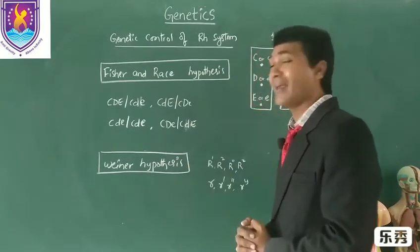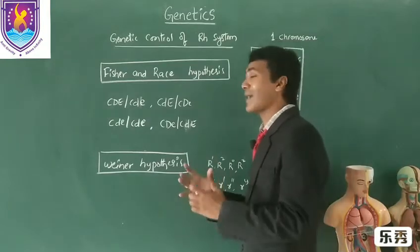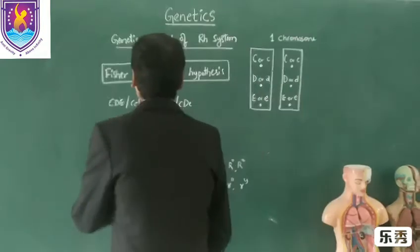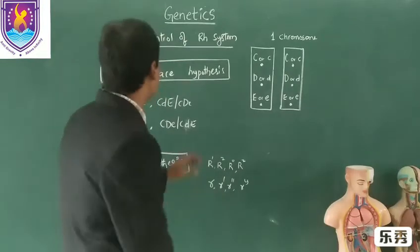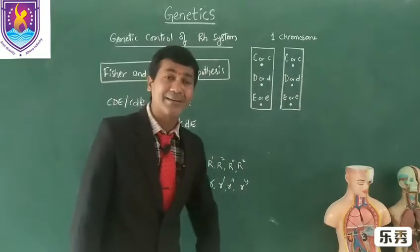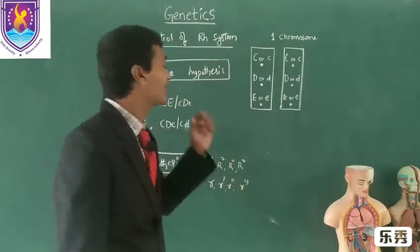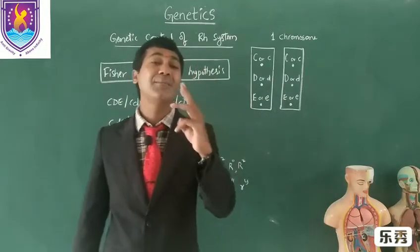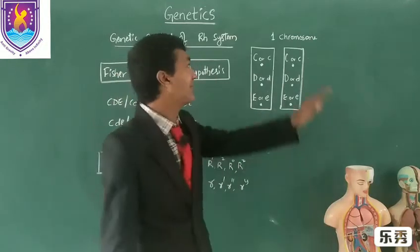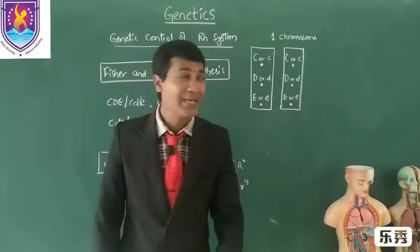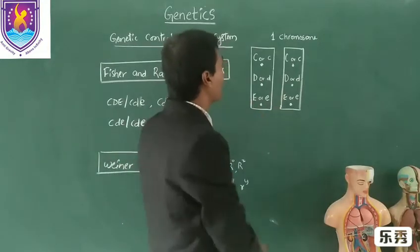Fischer and Race have proposed this hypothesis. According to Fischer and Race hypothesis, the Rh factor or Rh system is controlled by three pairs of alleles present on the first chromosome. These are the paired chromosomes, the first chromosome.